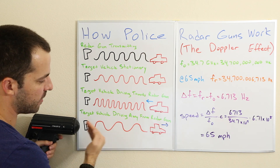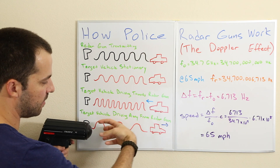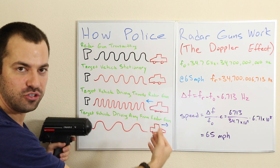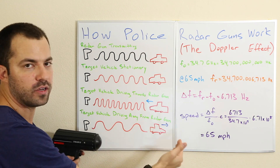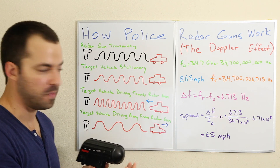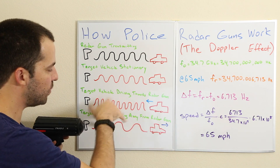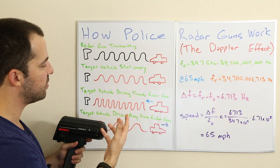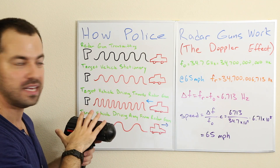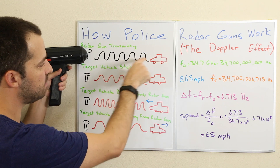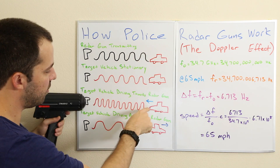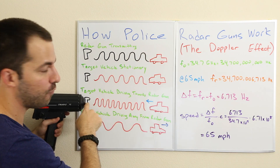On the flip side, let's say the car is driving away from the radar gun. The radar gun will be sending out its normal 34.7 GHz signal. That signal, when it gets reflected back, is going to slightly get stretched out due to the movement of the vehicle moving away. The radar gun is comparing the transmitted signal frequency with the reflected frequency.